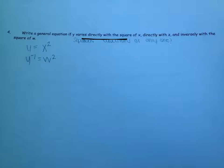Direct variation means that y equals some constant times x squared. That's what it means for y to vary directly with x, the square of x.